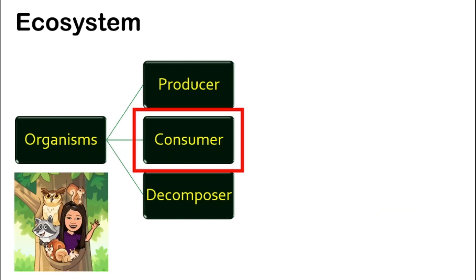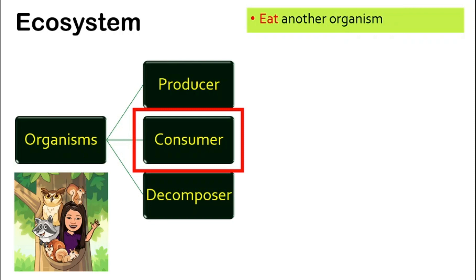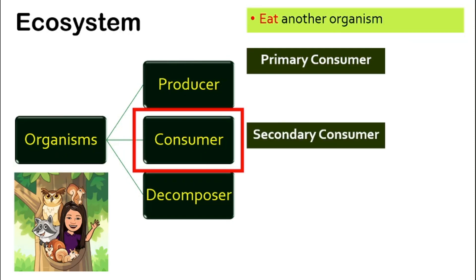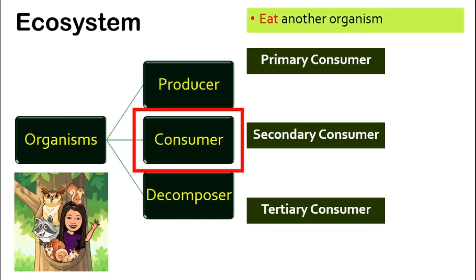How about the consumer? Consumers are the ones that eat another organism. Consumers can be classified into three different types: primary consumer, secondary consumer, and tertiary consumer. There are actually higher levels after tertiary consumer, but you will get the concept once you understand what is primary, secondary, and tertiary consumer.